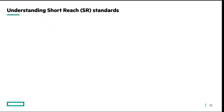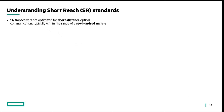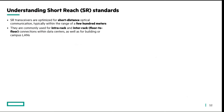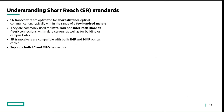Let's start with SR, which is a short-distance reach transceiver that can transmit your data within a few hundreds of meters. Because the distance is limited to a few hundreds of meters, they are commonly used for intra-rack or inter-rack communication, which can be floor to floor in a building as well. SR transceivers are compatible with both SMF and MMF type optical cables and support both LC and MPO type connectors.